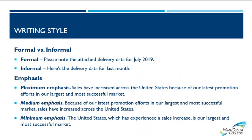The two different writing styles are formal versus informal. An example of formal would be: 'Please note the attached delivery data for July 2019.' Informal would be: 'Here's the delivery data for last month.' Regarding emphasis, maximum emphasis would be: 'Sales have increased across the United States because of our latest promotion efforts in our largest and most successful market.' Medium emphasis: 'Because of our latest promotion efforts in our largest and most successful market, sales have increased across the United States.' Minimum emphasis: 'The United States, which has experienced a sales increase, is our largest and most successful market.'